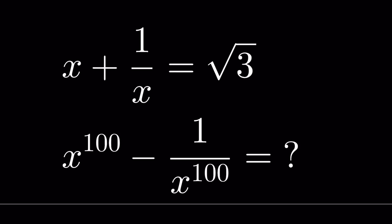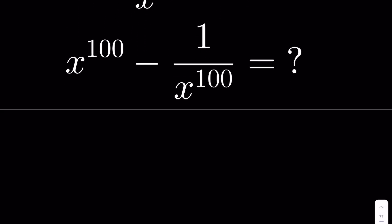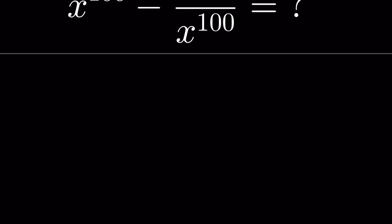If x plus 1 upon x is equal to square root of 3, what is the value of x raised to the power 100 minus 1 upon x raised to the power 100? Can you solve this? Pause the video and let me know your answer in the comment section. This seems a difficult question but it's a tricky one.